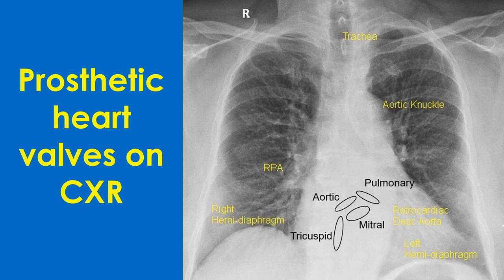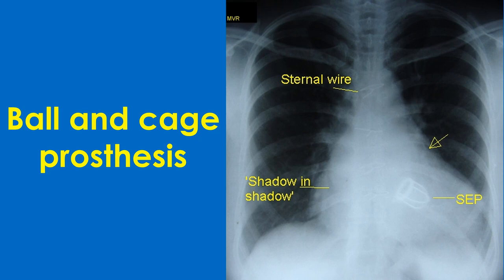The most commonly replaced valves are the mitral and aortic, tricuspid next, and pulmonary the least. Annuloplasty rings used for valve repair may also be seen on chest X-ray.